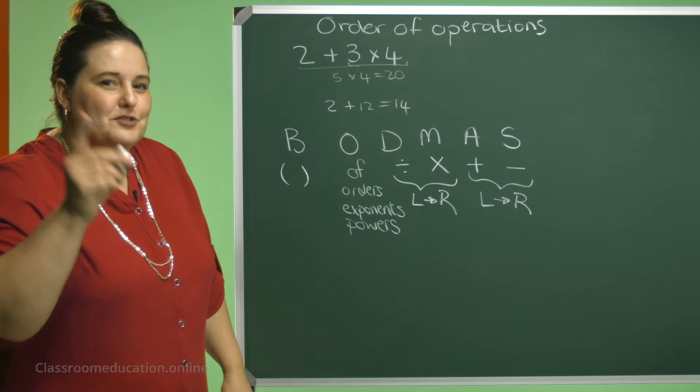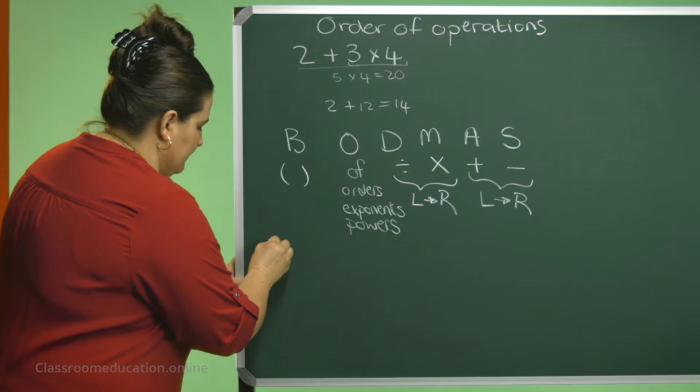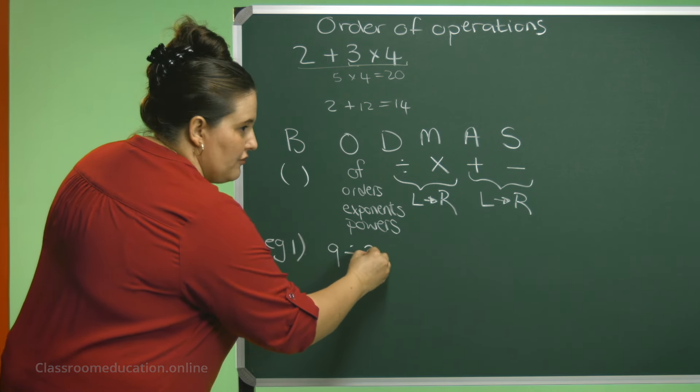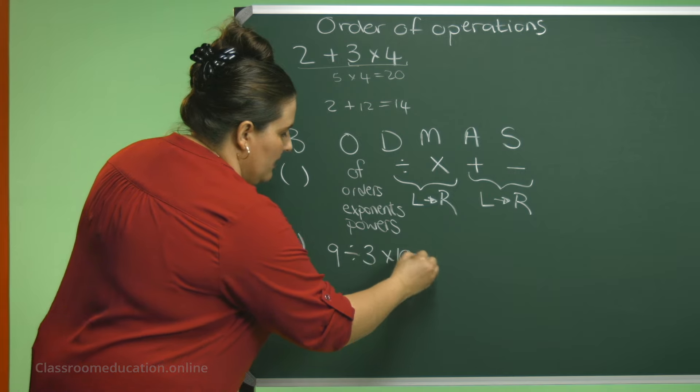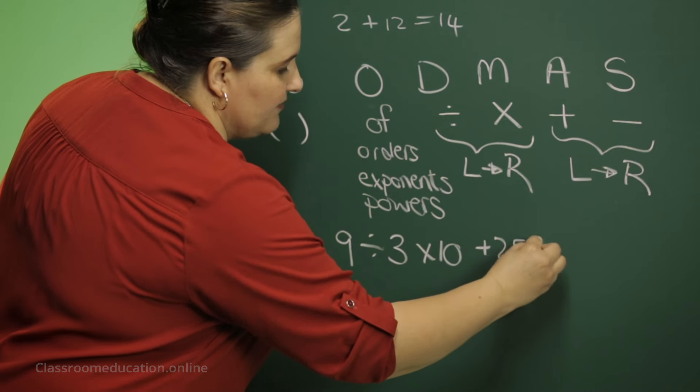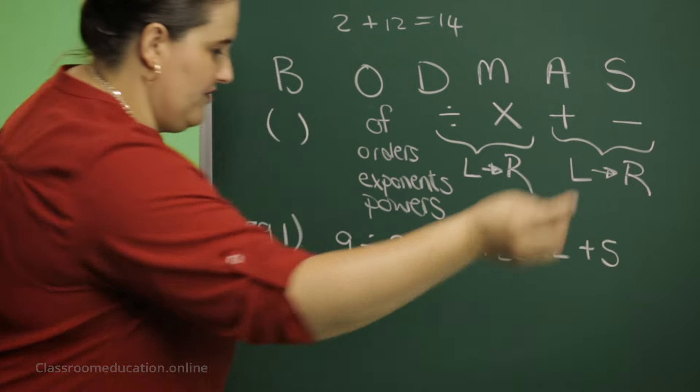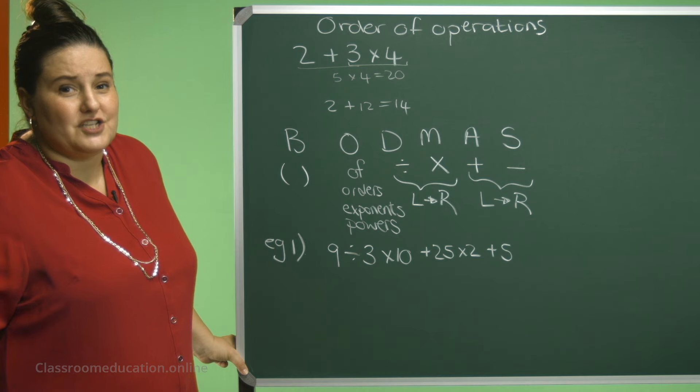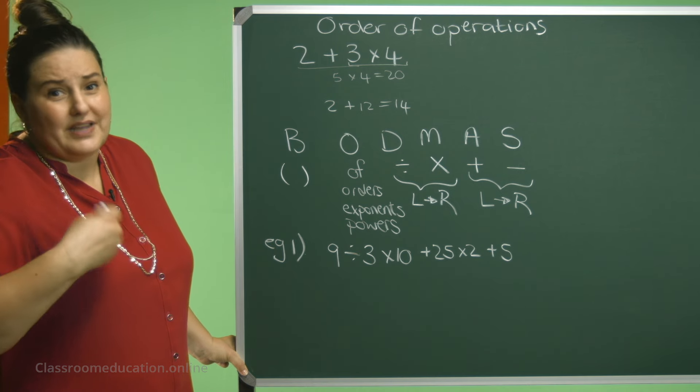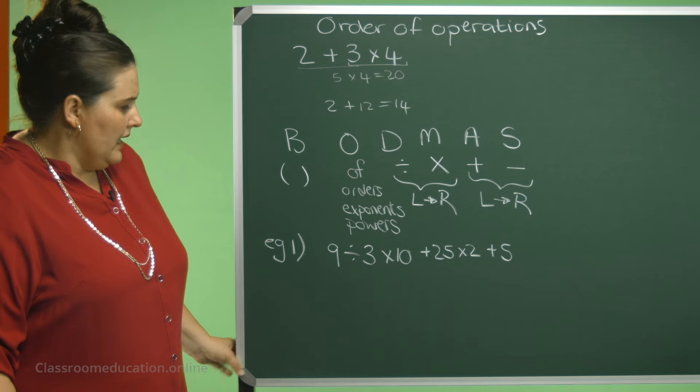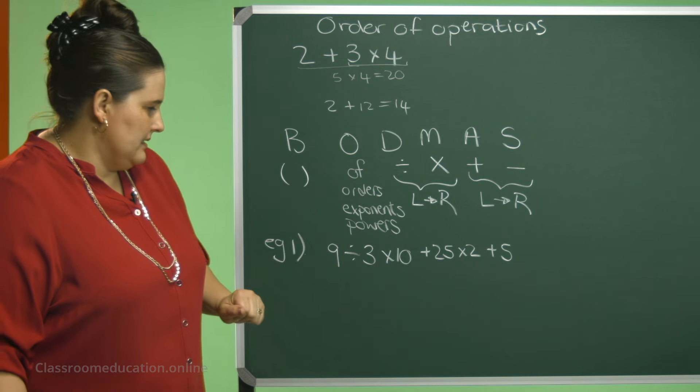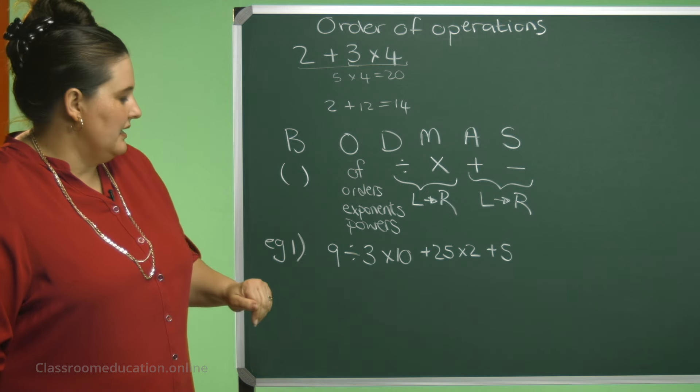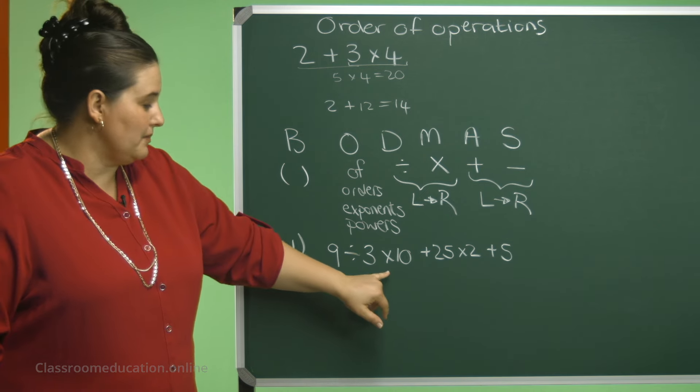Let's do an example to see whether you understand. 9 divided by 3 times 10 plus 25 times 2 plus 5. If I give you this calculation. And boys and girls, actually you did this in grade 6 already and lower grades already. But if you have a look at this, what will you do? Which ones will you tackle first? Let's see. I have division and multiplication.